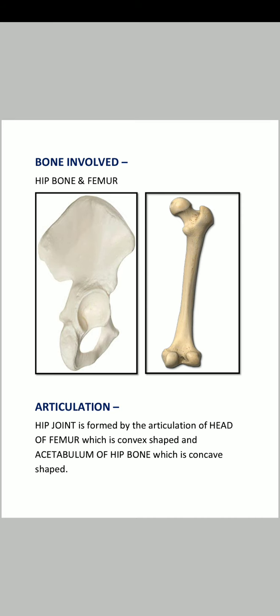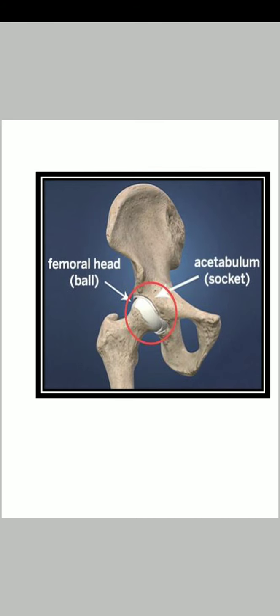The hip joint is formed by the articulation of the head of the femur, which is convex in shape, and the acetabulum of the hip bone, which is concave in shape. As you can see in the diagram, the femoral head is the ball and the acetabulum works as the socket. Inside the red circle you can see how they fit together — the head of femur and acetabulum join each other to form the hip joint.